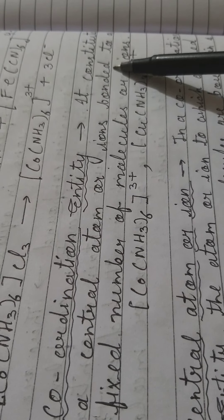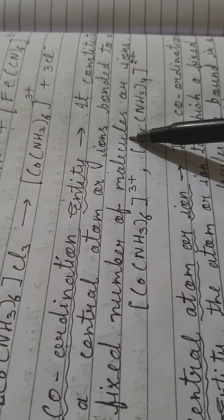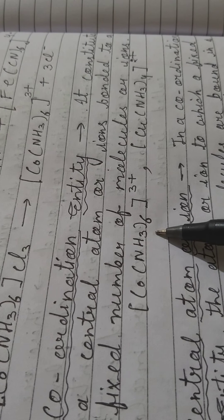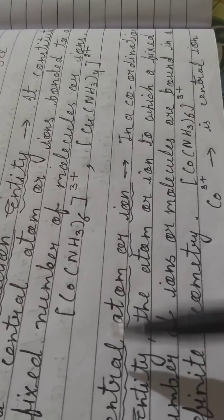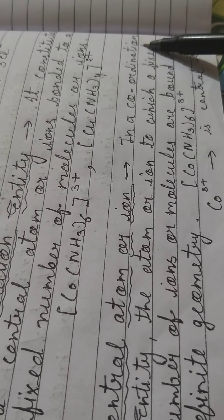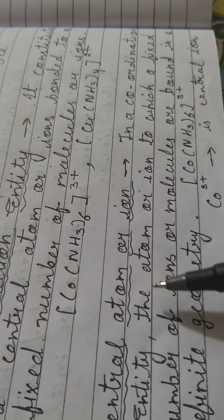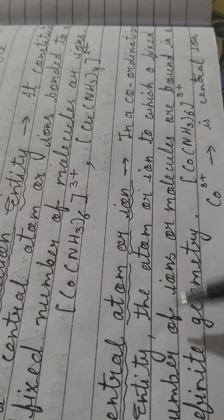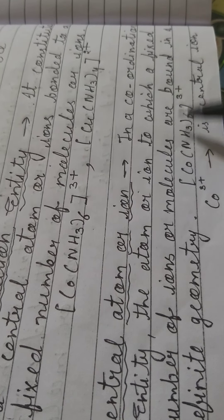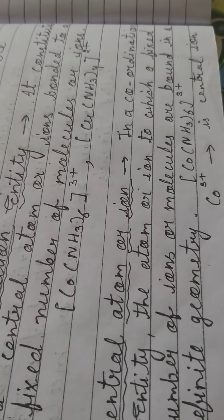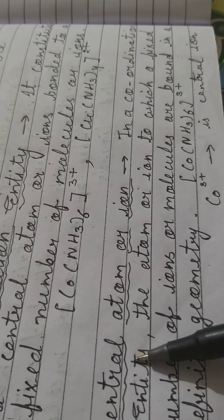After that, we need to understand the coordination entity. It constitutes a central metal atom or ion bonded to a fixed number of molecules or ions — that is called the coordination entity. Now, within a coordination entity, the atoms or ions to which a fixed number of ions or molecules are bound in a definite geometry — that is called the central atom.